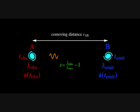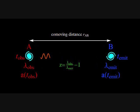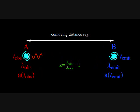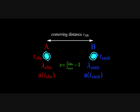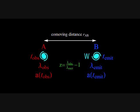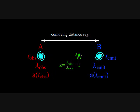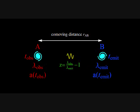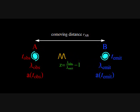We can quantify the change in wavelength with the redshift parameter Z, defined as the observed wavelength divided by the emitted wavelength minus 1. We want to derive a relationship between the redshift parameter and the scale factor at the beginning and end of the photon's trip.